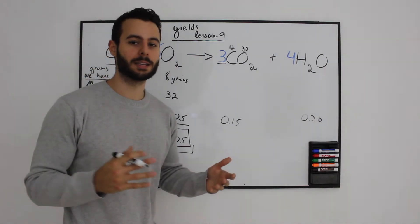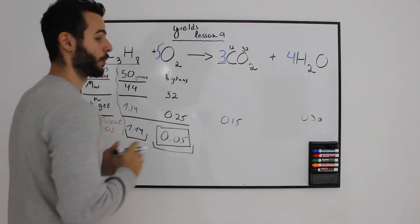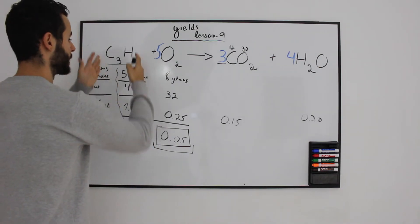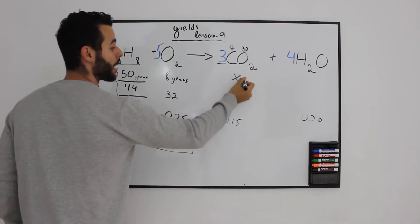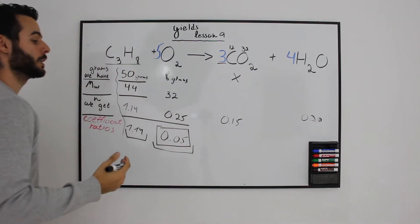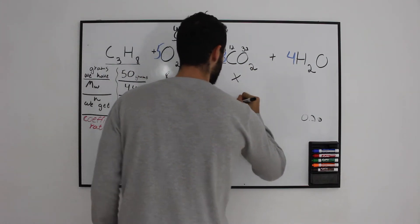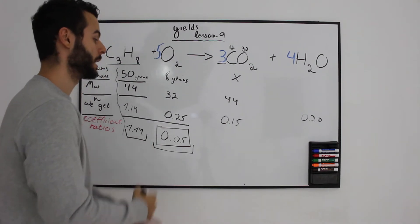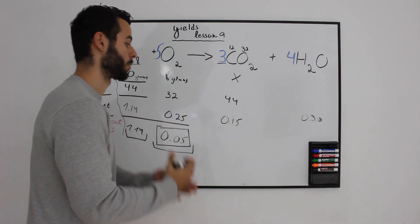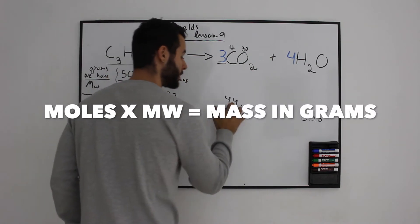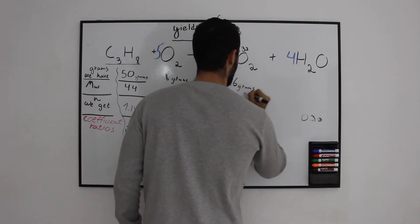They were asking how many grams of carbon dioxide you would get in this reaction, given 50 grams of propane and 8 grams of oxygen. So now you have to climb up the table to reach the number of grams for carbon dioxide. 0.15 moles of carbon dioxide has a molecular weight of 44, so you multiply 0.15 by 44 and get 6.6 grams of carbon dioxide.